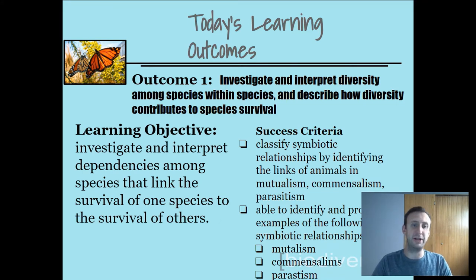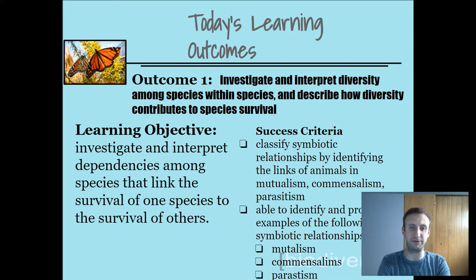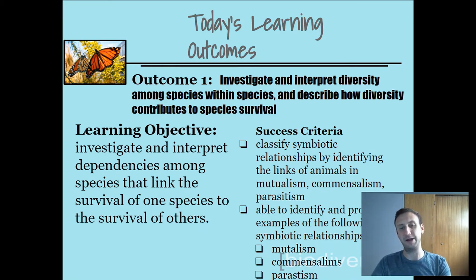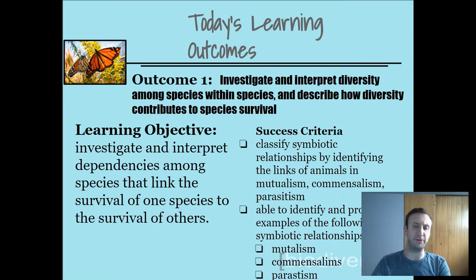Here are today's learning outcomes. The objective is to investigate and interpret diversity among species and describe how diversity contributes to species survival — specifically looking at symbiotic relationships. If you are successful after today's lesson, the criteria would be that you can classify symbiotic relationships by identifying mutualism, commensalism, and parasitism, and also identify and provide examples of those same three symbiotic relationships.